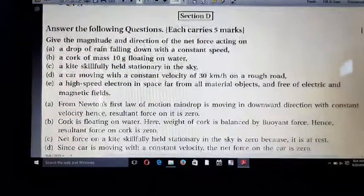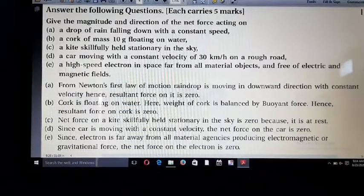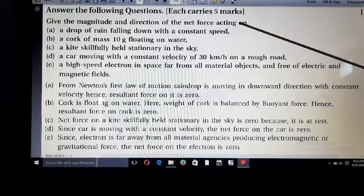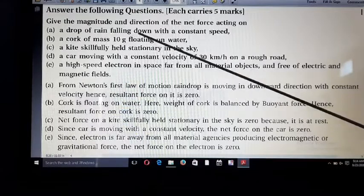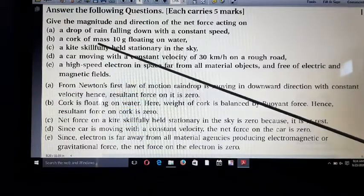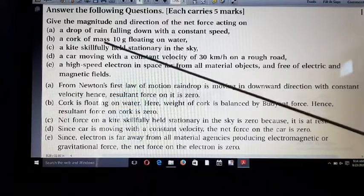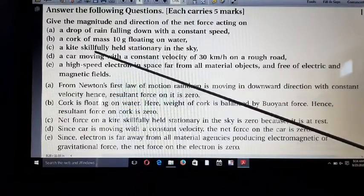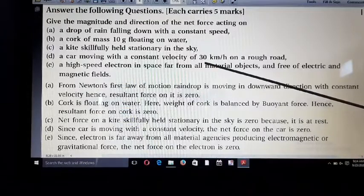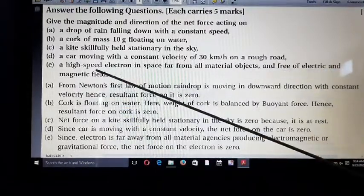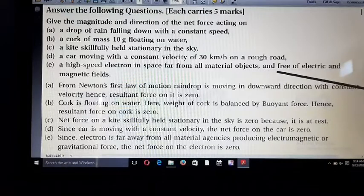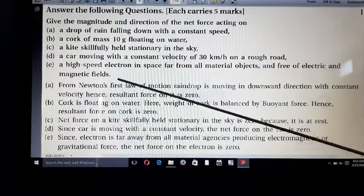And 5.1. Give the magnitude and direction of the net force acting on: 1, first, drop of rain falling down with constant speed. 2, B, the cork of mass 10 grams floating on water. 3, C, the kite skillfully held stationary in the sky. 4, D, a car moving with constant velocity of 30 km/h on a rough road. 5, E, the high speed electron in space far from all material objects and free of electric and magnetic field.